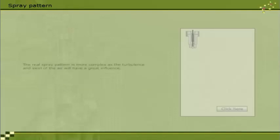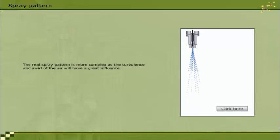The real spray pattern is more complex as the turbulence and swirl of the air will have a great influence. As the liquid jet leaves the nozzles, it becomes turbulent and spreads out as it entrains and mixes with the surrounding air. The liquid column leaving the nozzles disintegrates within the cylinder over a finite length, called the break-up length, into drops of different sizes.